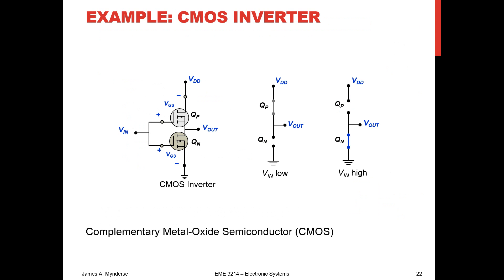We see voltage-controlled switching in CMOS logic. In this example with two MOSFET transistors, we apply a voltage at V-in. If V-in is low, QN is an open switch and QP is a closed switch; V-out is directly connected to VDD. If V-in goes high, QP is open and QN is closed, and V-out is directly connected to ground. The result is that V-out is the digital opposite of V-in — it's an inverter.